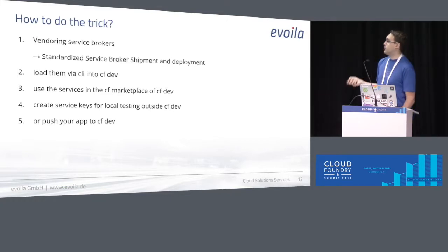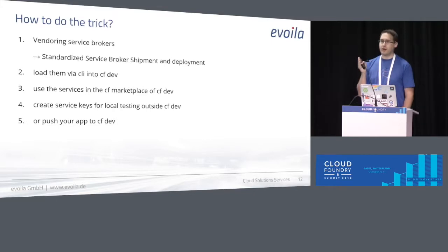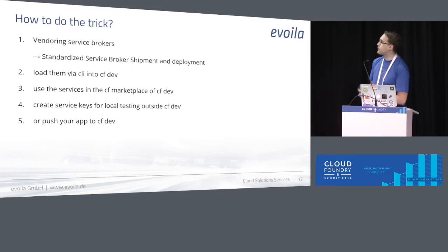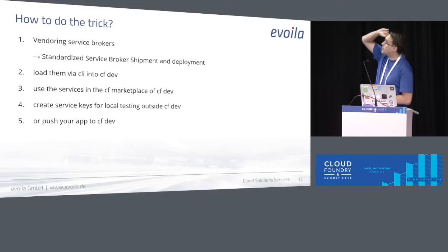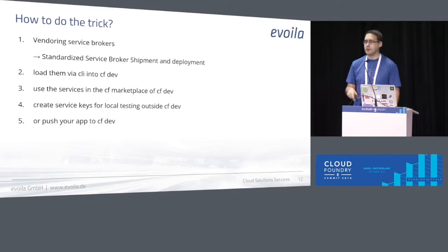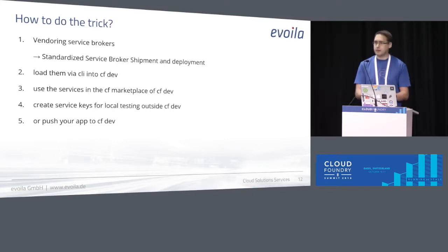So what do we have to achieve? First of all, you have to have some kind of vendoring mechanism for the service brokers. Why? If you look at service brokers, they are all a little bit different — they all have to be started differently, how they work, how they will be shipped, how they will be deployed. There are tiles, there are no tiles, they are deployed as VMs, as cloud-native applications inside Cloud Foundry. So you have to have a standardized vendoring system for that. Then you have to load them via CLI into CF Dev so you can use them in a marketplace, create service instances, create service keys for local testing outside of CF Dev. So you can use these service instances with your IDE — starting some of my stuff locally and connecting to that database also.